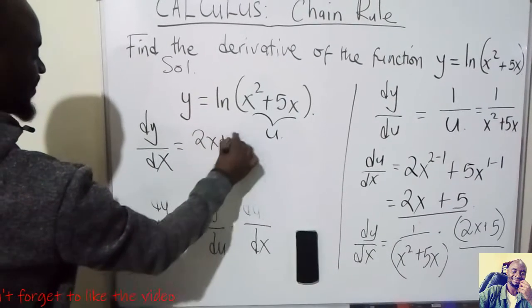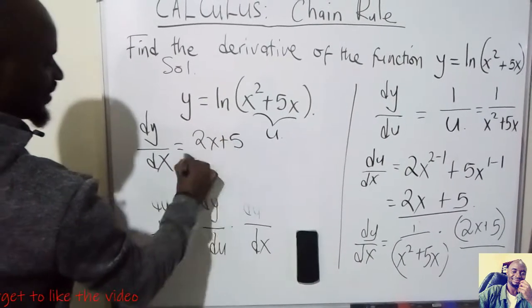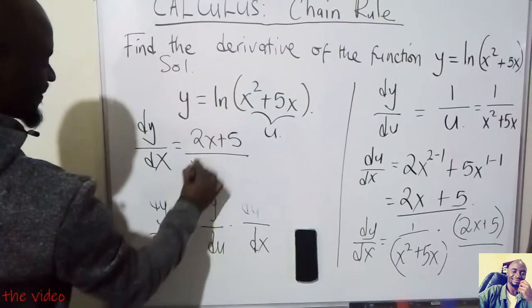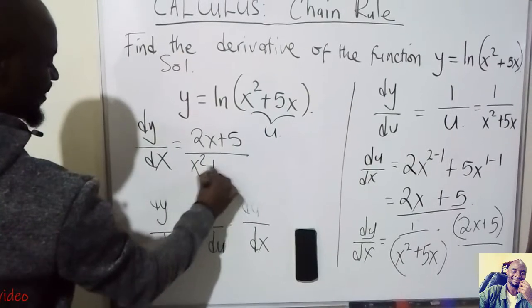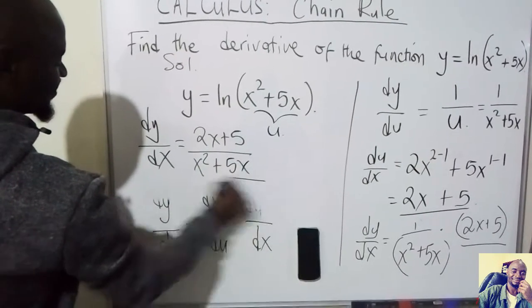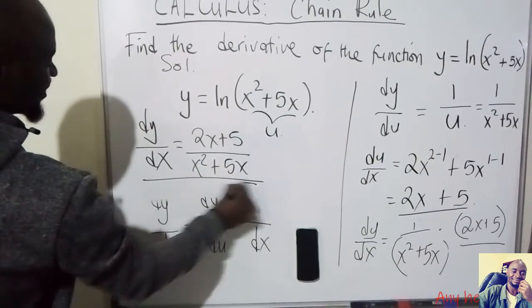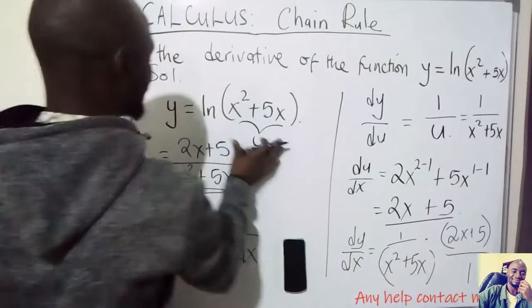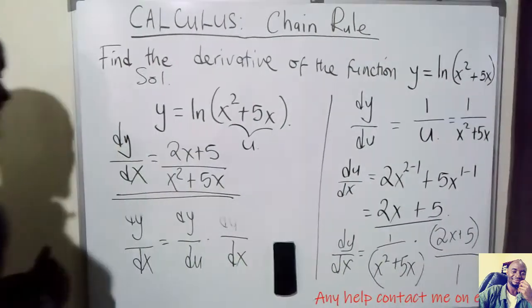This gives dy/dx = (2x + 5)/(x² + 5x), and this is the gradient function of the original function y = ln(x² + 5x).